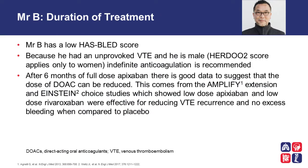Returning to our patient: we apply the HERDOO2 score to Mr. B and he scores low. Because he had an unprovoked VTE and because he is male — and the HERDOO2 score only applies to women — we feel confident that indefinite anticoagulation should be recommended, as his risk of recurrence is around 10% per year if we stop. After six months of full-dose apixaban, there is good data from the Amplify Extension and Einstein Choice studies showing that low-dose apixaban and low-dose rivaroxaban were effective in reducing VTE recurrence with no excess bleeding compared to placebo, so the dose of DOAC can be reduced. The option therefore exists to extend with a lower dose of the direct oral anticoagulant.